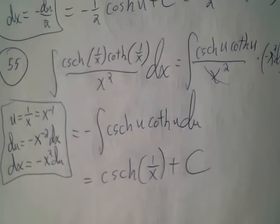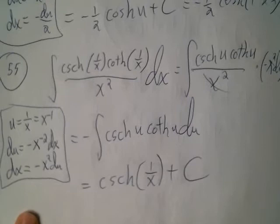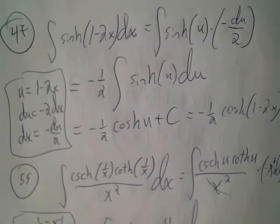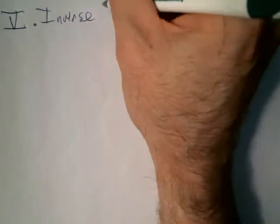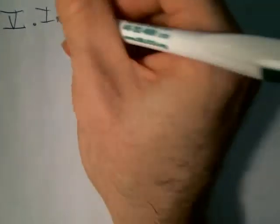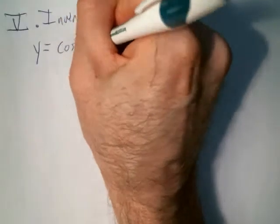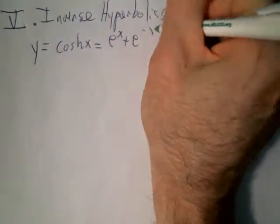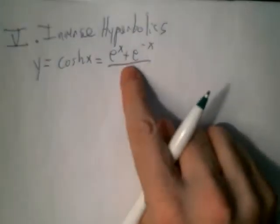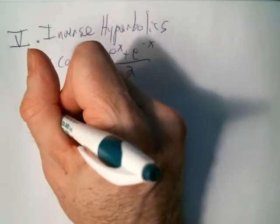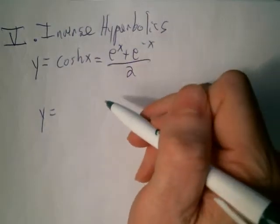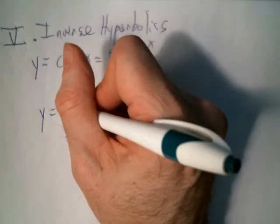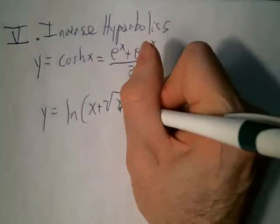Just like with trig functions we dealt with inverse trig, we also deal with inverse hyperbolic functions. Because hyperbolics are defined in terms of exponentials, their inverse forms are in terms of logarithms. For example, the inverse of cosh(x) can be shown to equal ln(x + √(x² - 1)). You don't need to have these memorized — just look them up in tables.